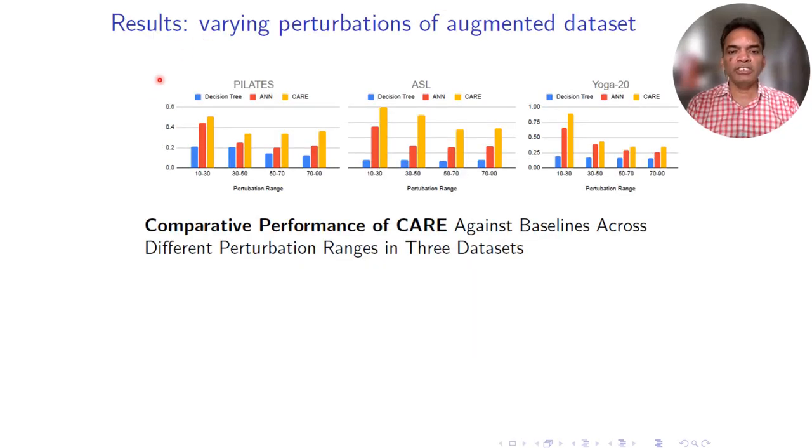Here is one more ablation study. The three original datasets do not come with incorrect poses, so we have to augment those datasets with incorrect poses by perturbing the original poses. Here are the perturbation ranges, and CARE outperformed all the baselines across all three datasets for all different perturbation ranges.